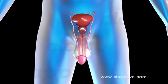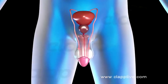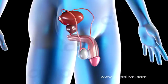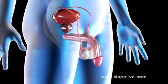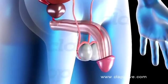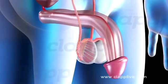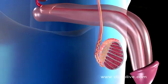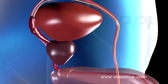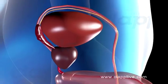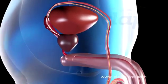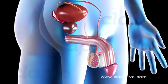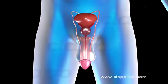The male reproductive system is located in the pelvic region. It consists of a pair of testes, accessory ducts, accessory glands, and external genitalia.